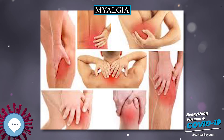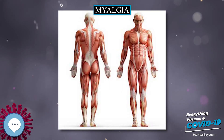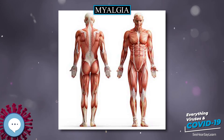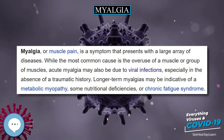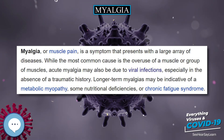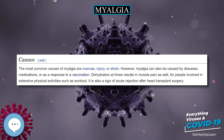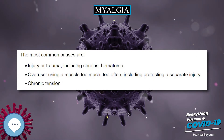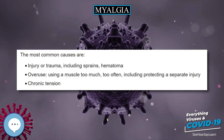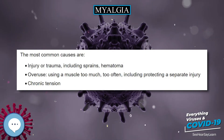Myalgia, or muscle pain, is a symptom that presents with a large array of diseases. While the most common cause is the overuse of a muscle or group of muscles, acute myalgia may also be due to viral infections, especially in the absence of a traumatic history. Longer-term myalgias may be indicative of a metabolic myopathy, some nutritional deficiencies, or chronic fatigue syndrome.